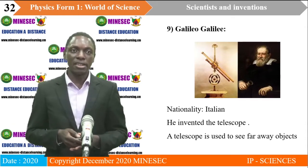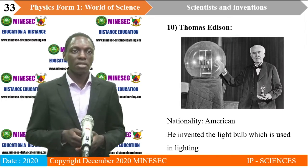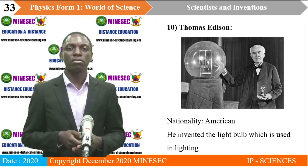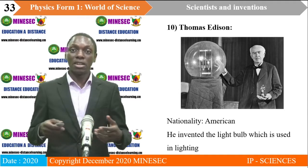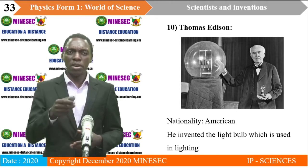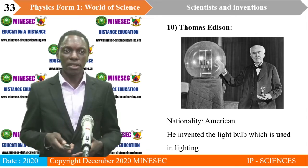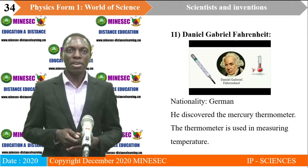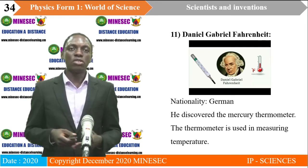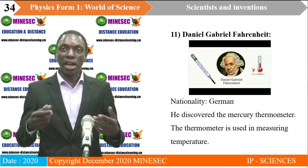Galileo Galilei was an Italian who invented the telescope, which is used to see far-away objects. The light bulb was invented by Thomas Edison — imagine life without a light bulb or complete darkness when electricity goes off at night. This is a very useful invention helping in providing security and allowing us to carry on activities at night. Daniel Gabriel Fahrenheit invented the thermometer — more specifically the mercury thermometer — which is used in measuring temperature, such as body temperature at the hospital.